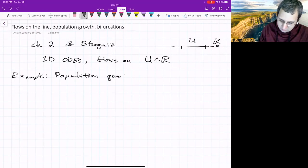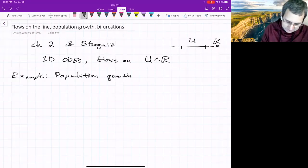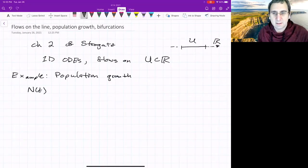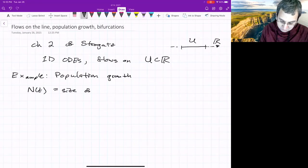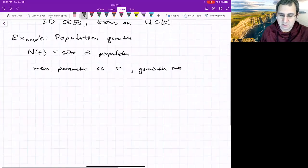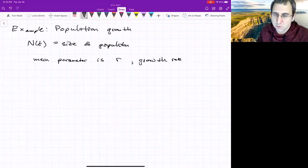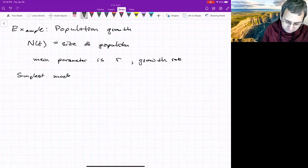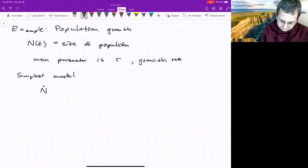So population growth. We've got, I'll use N. It's a function of time. Capital N is the size of the population, so it's the number of individuals. And the main parameter is something called the growth rate.